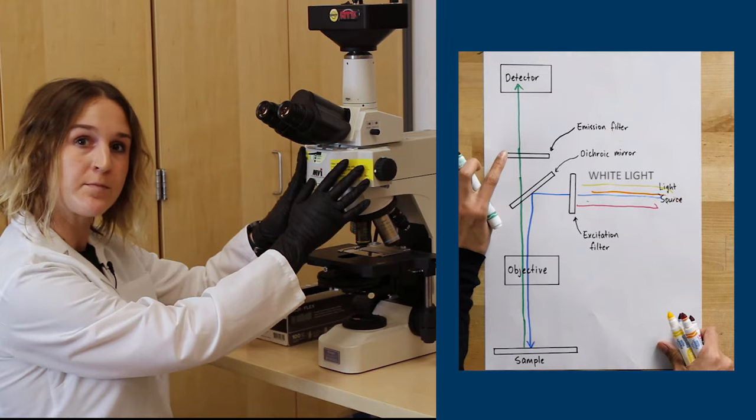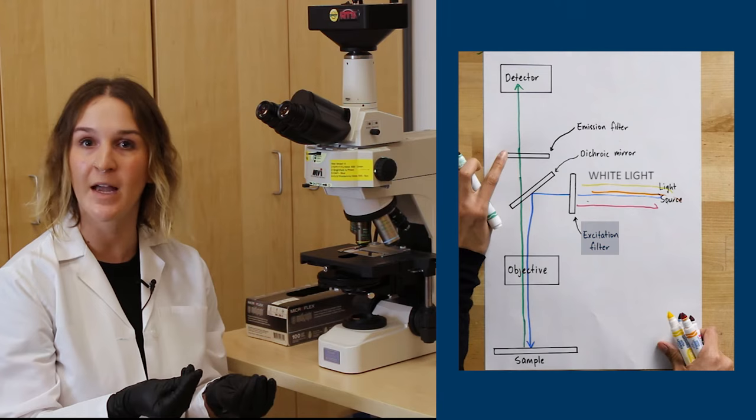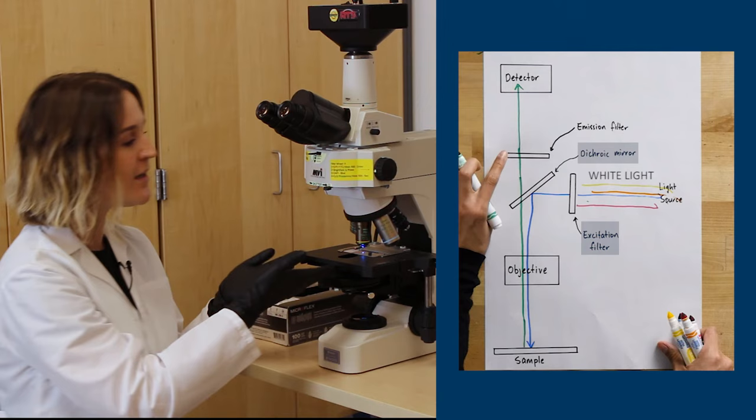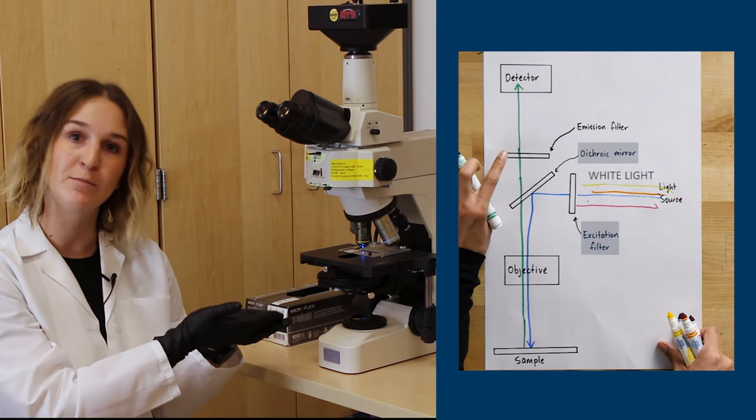And so in order to separate these two light paths we use a filter cube. And the filter cubes are housed here and they have an excitation filter that picks a particular color of light to excite our fluorescent molecule. In this case if we're using GFP we'll use a blue light and that blue light will then bounce off a dichroic mirror. And if I open a shutter here we'll see that it's made it to our sample.